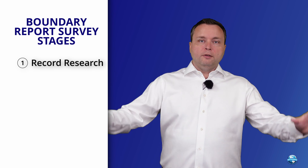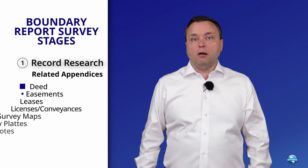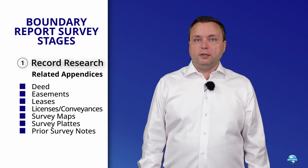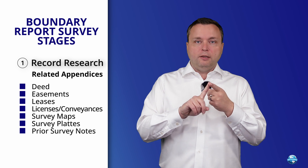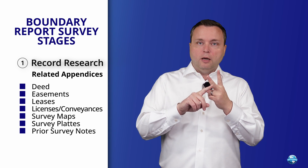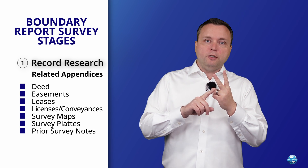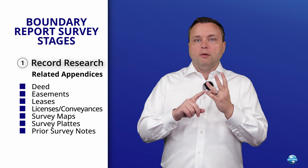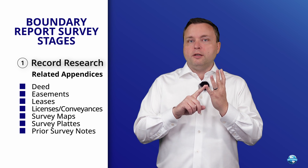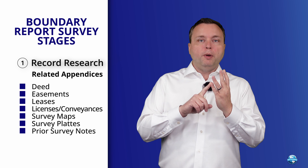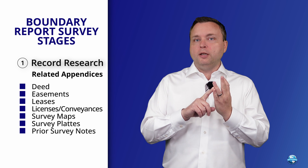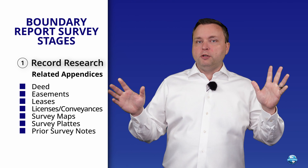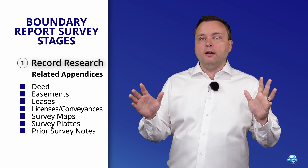In stage one there are a lot of appendices: an appendix for the deeds, an appendix for the easements, an appendix for leases, an appendix for any licenses, boundary line agreements, or other conveyances. But don't stop there.